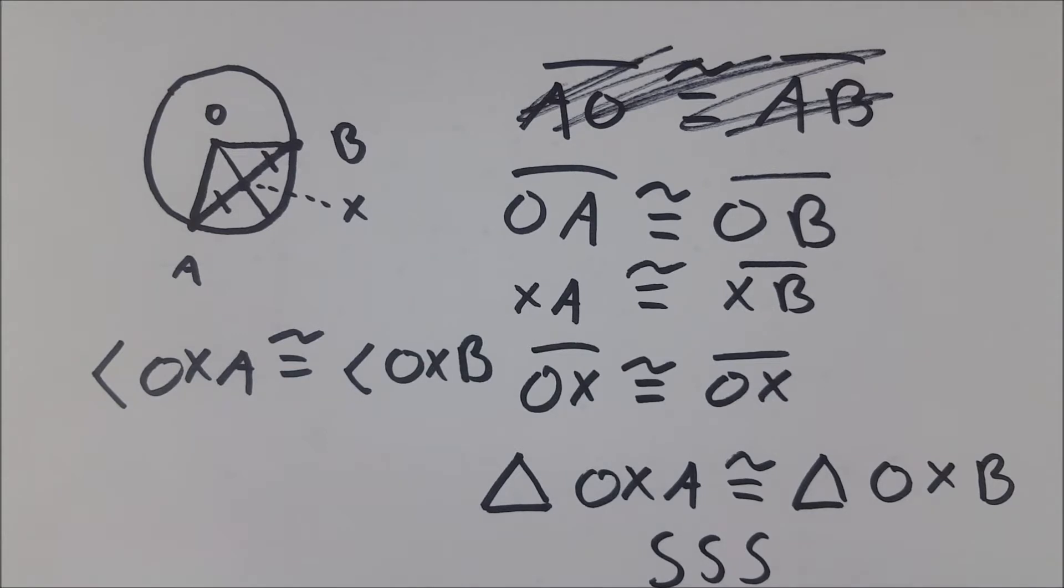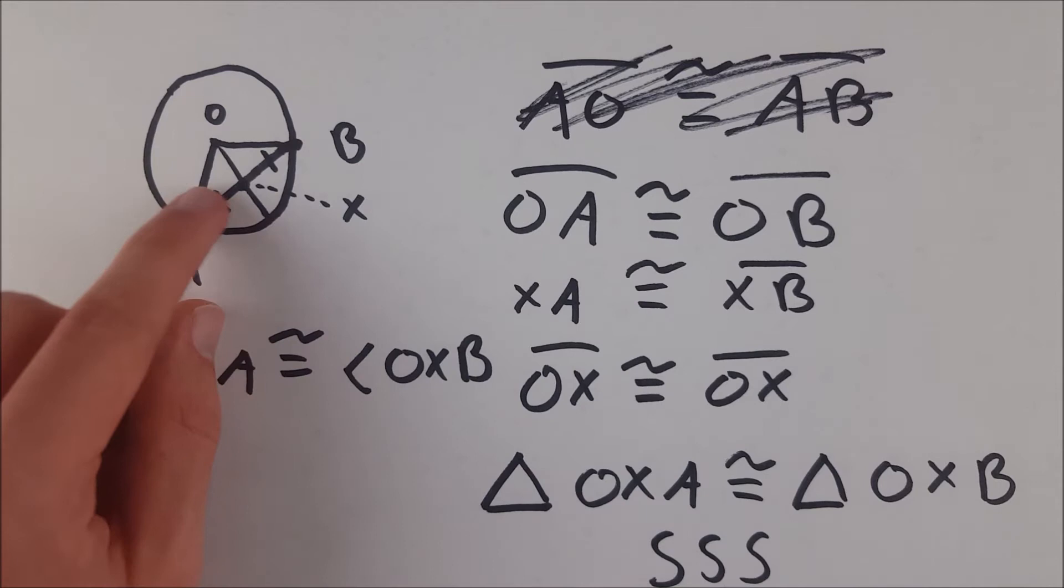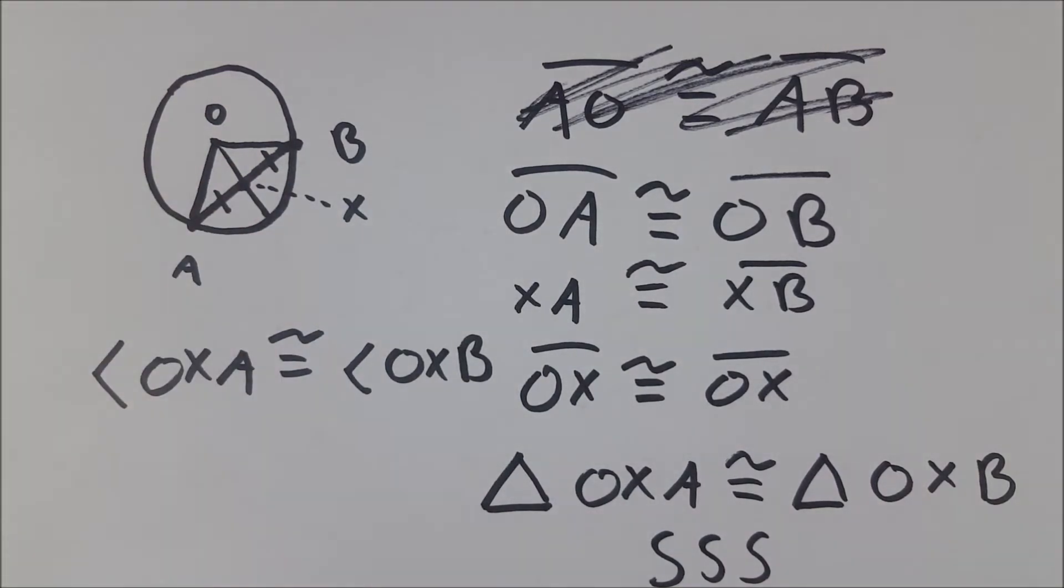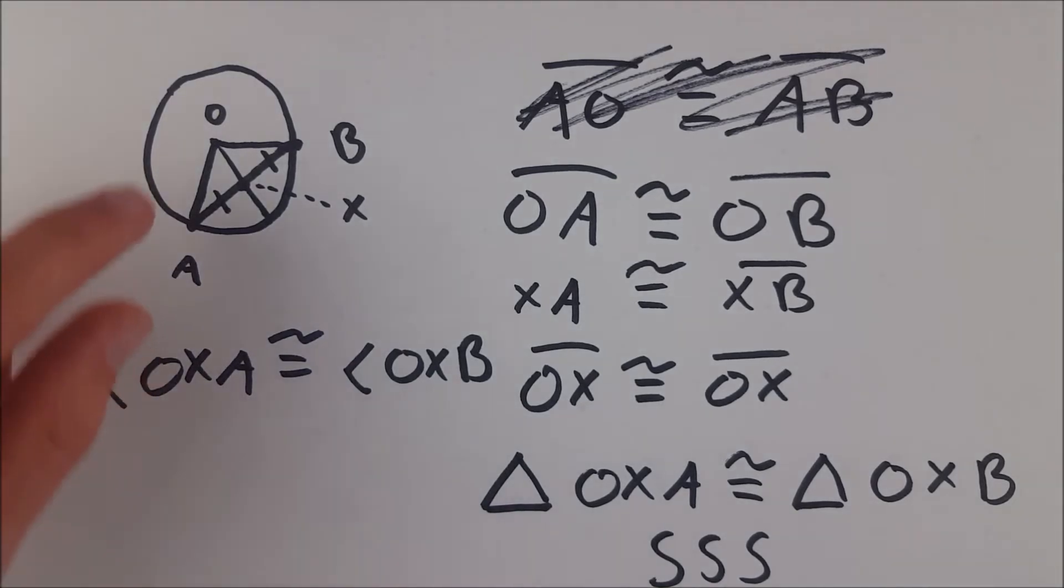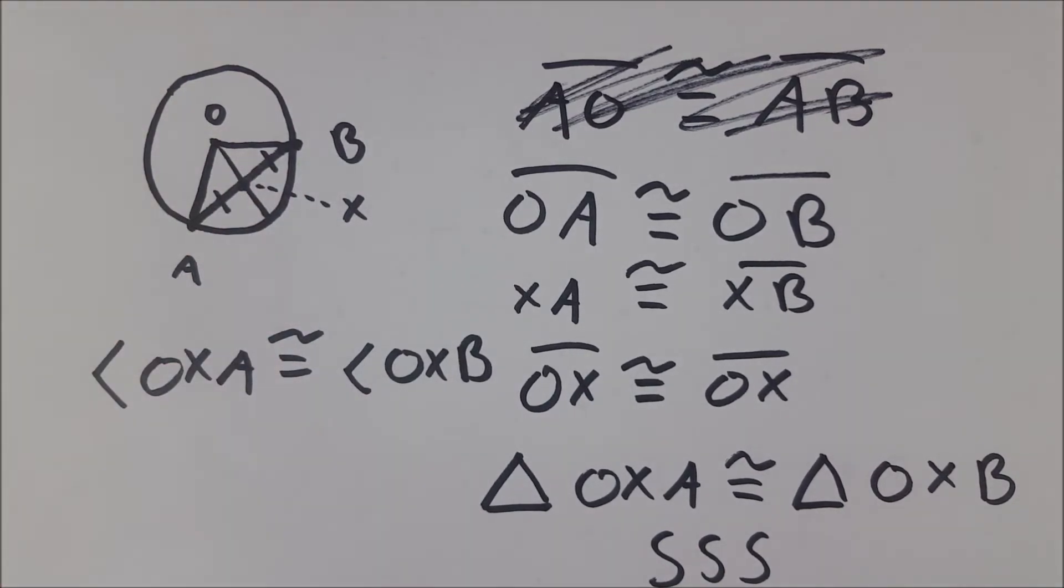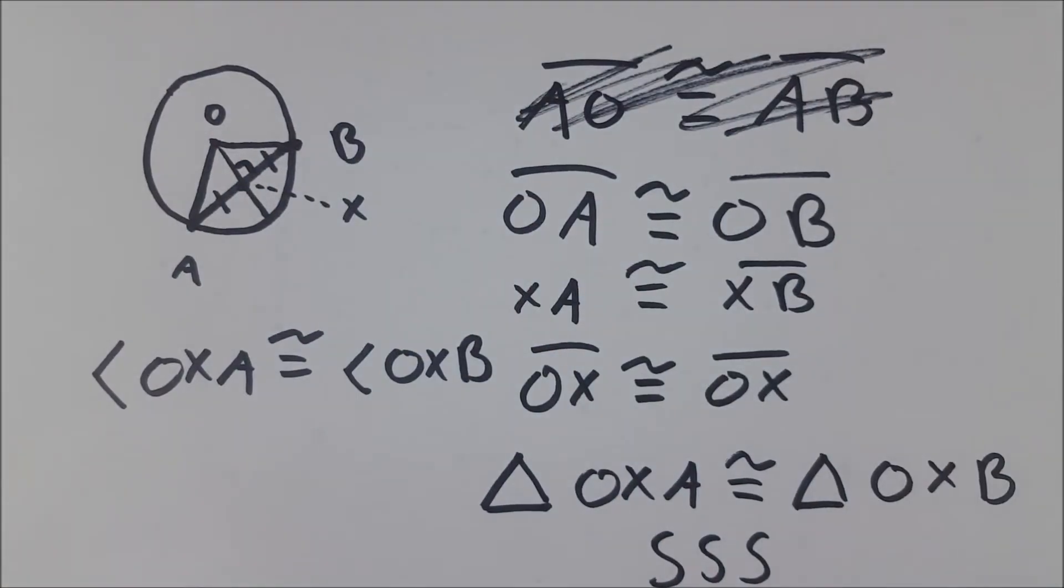So we finished with showing these triangles are congruent by side, side, side, and then therefore, this angle here is congruent to this angle here, and because they are congruent supplementary angles, they have to be right angles that have a measure of 90 degrees. Therefore, by definition of perpendicular, this radius is perpendicular to that chord, and I'll just put that little bit in there for completion's sake.